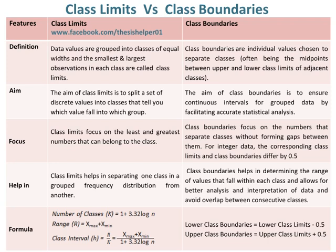The aim of class limits is to split a set of discrete values into classes that tell you which values fall into which group. Whereas the aim of class boundaries is to ensure continuous intervals for grouped data by facilitating accurate statistical analysis.